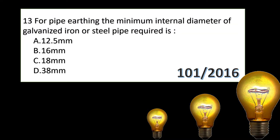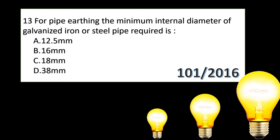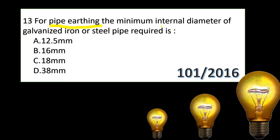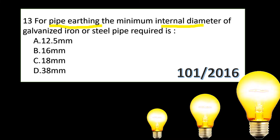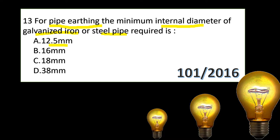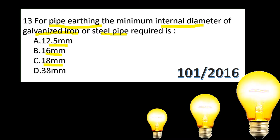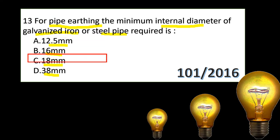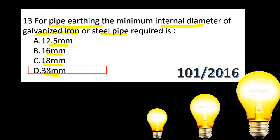For pipe earthing, the minimum internal diameter of galvanized iron or steel pipe is required. Options are 12.5 mm, 16 mm, 18 mm, and 38 mm. The answer for pipe earthing is 38 mm galvanized iron.